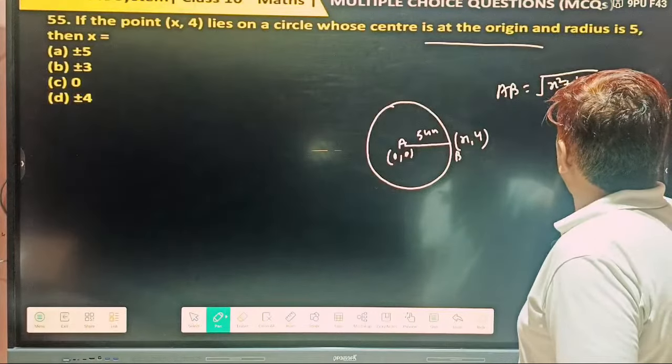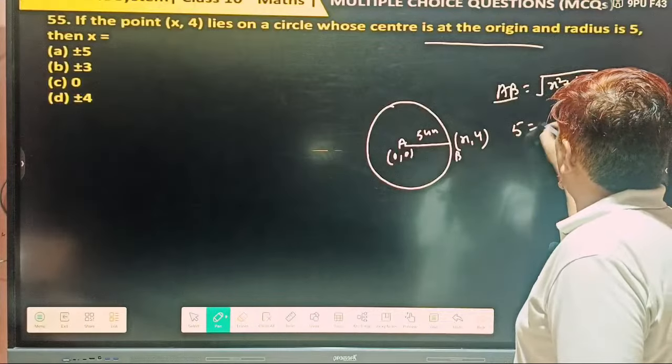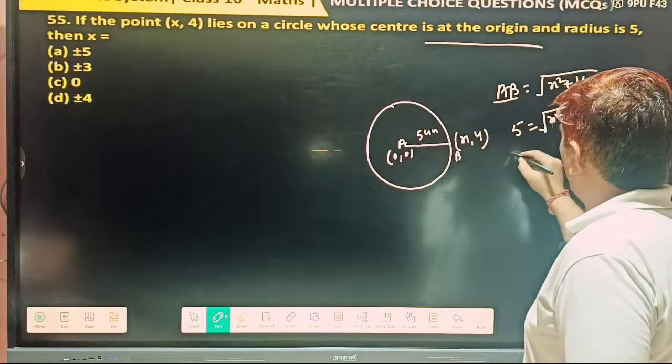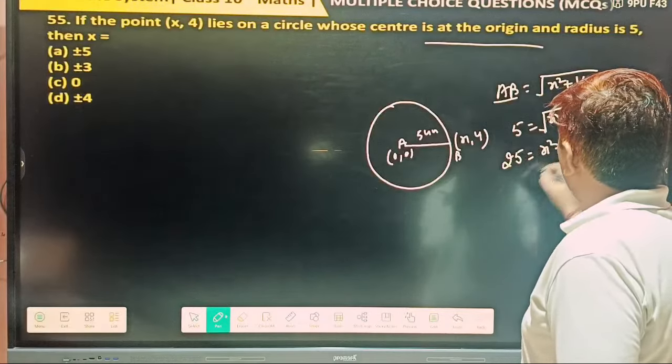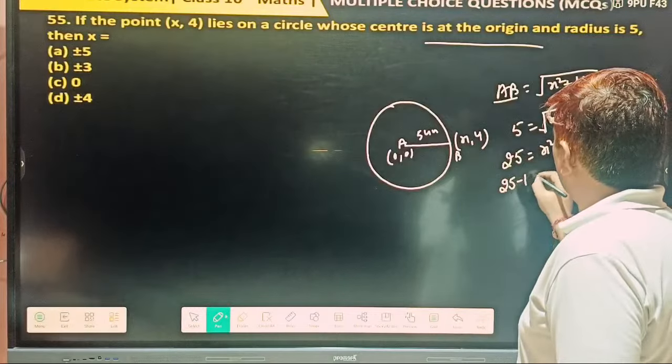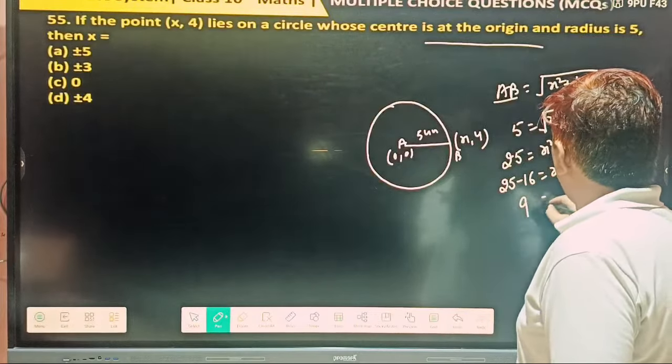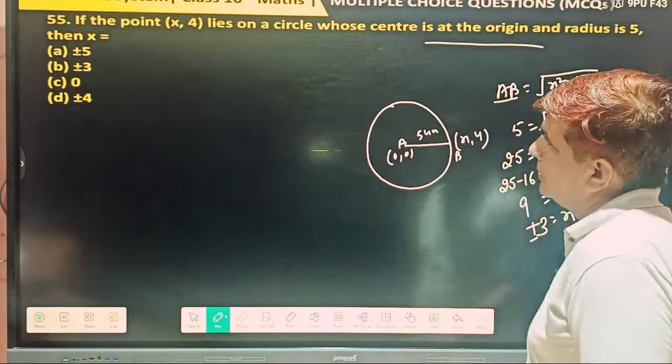X square plus 4 minus 0, 16. And what's your AB? 5 equal to this. X square plus 16. Squaring both sides, 25 equal to X square plus 16. So 25 minus 16 equal to X square. So 9 equal to X square. So what's your X? Plus minus 3.